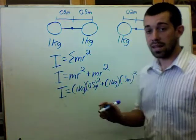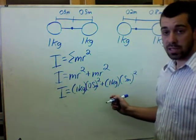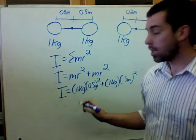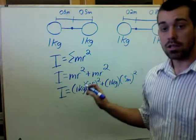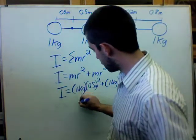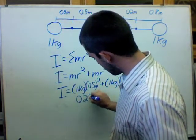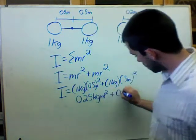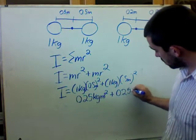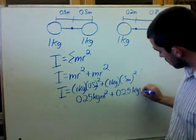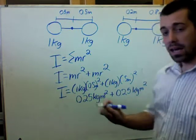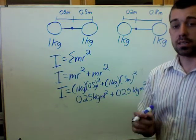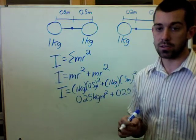Okay. When I solve this, I'm going to get each object is contributing 0.25 kilogram meters squared to the rotational inertia. And when I add that up, I'll find that the total rotational inertia of that object is 0.5 kilogram meters squared.